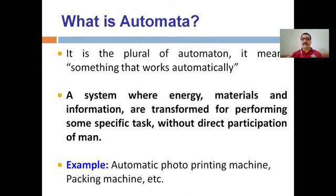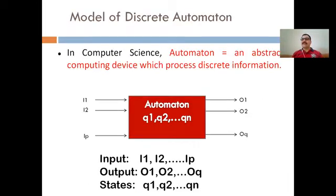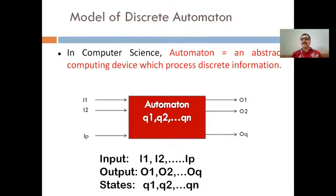Famous examples of automata include the automatic photo printing machine and the packing machine. An automaton can also be considered as an abstract computing device which processes discrete information. The discrete model of automata can be explained using three components: the set of inputs, set of outputs, and the set of states.